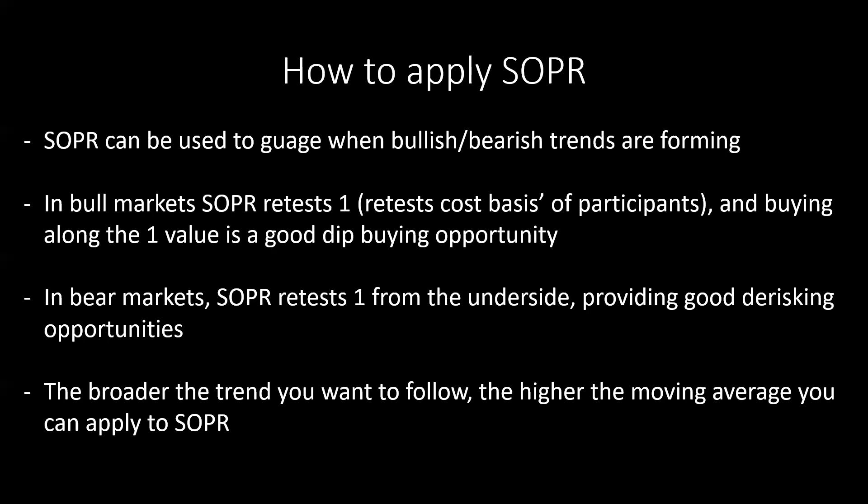In a bear market, especially newer market participants that are perhaps in the market just because Bitcoin was only going up during the bull market, maybe they don't have any fundamental understanding of the value proposition of Bitcoin. When we are in a bear market declining 50 to 75%, whenever we retest their cost basis, they may say they just want to break even and get out. That's why we see SOPR get rejected oftentimes off of the first initial retests of one from the underside. The broader the trend you want to follow, the higher the moving average you can apply to SOPR — we can look at the daily, seven-day, 14-day, 30-day, or even the 90-day moving average.